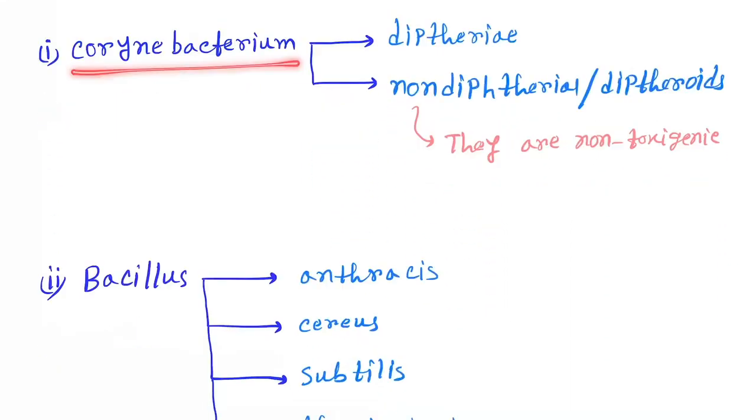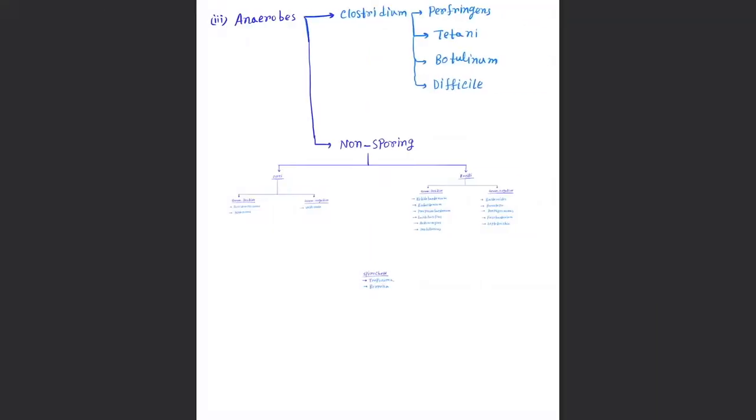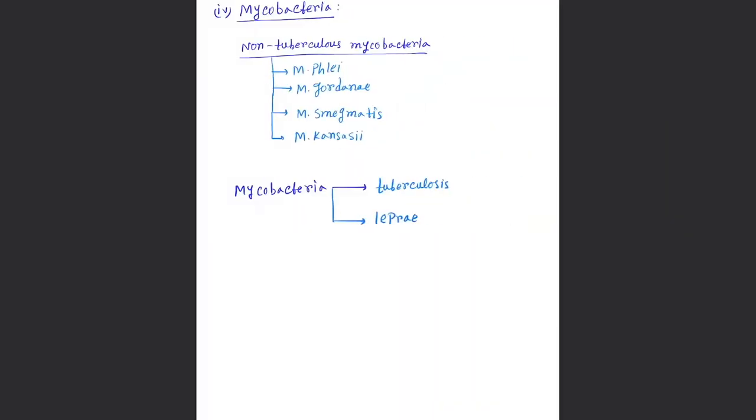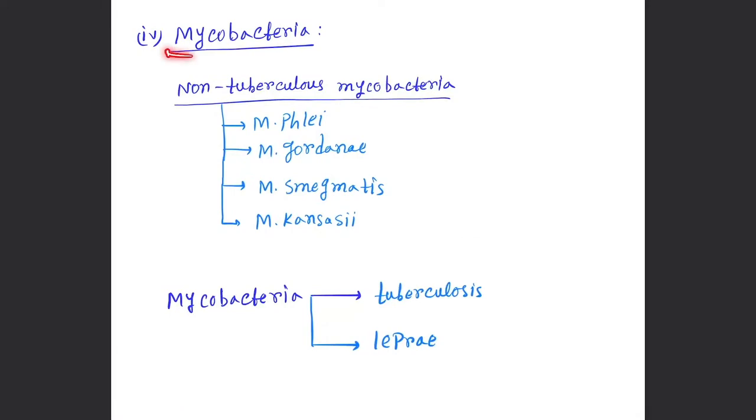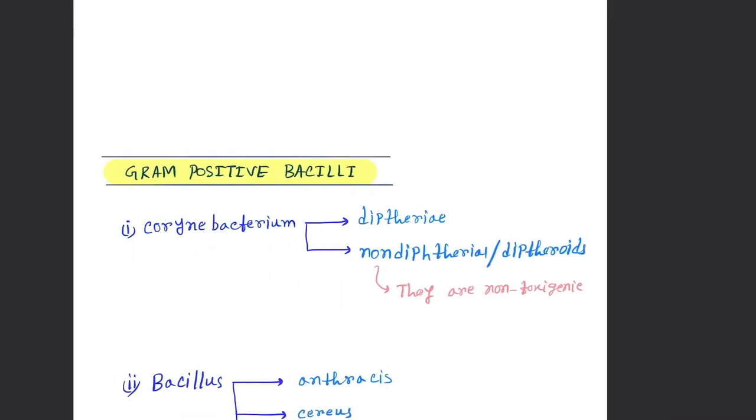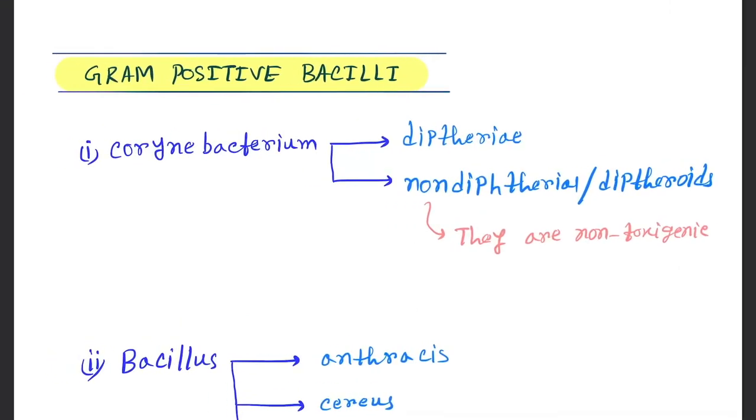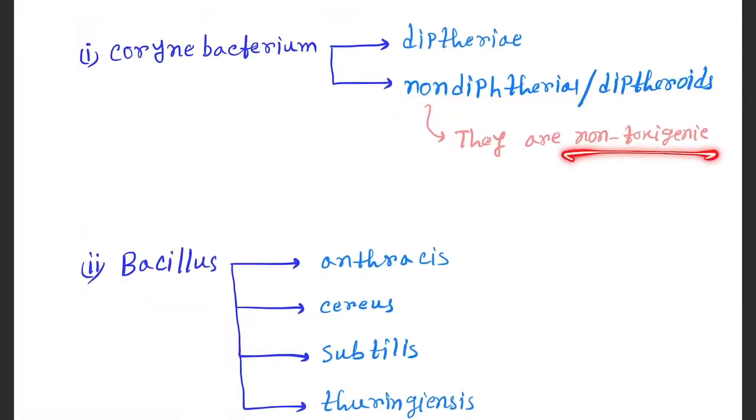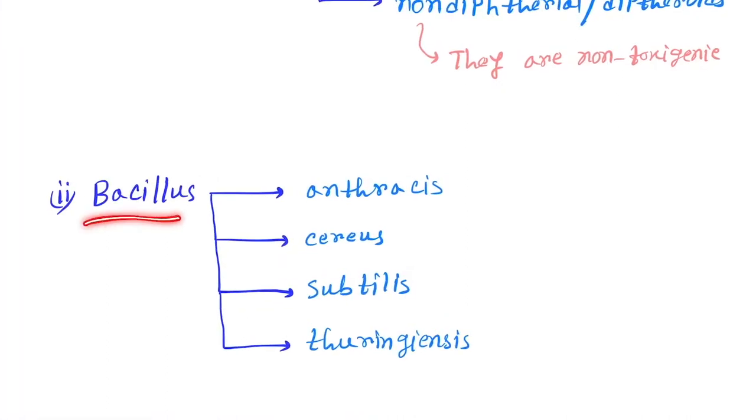Now gram positive bacilli. First one is Corynebacterium, next is Bacillus, next is Anaerobes, next is Mycobacteria, and miscellaneous gram positive bacilli. So starts one by one. Corynebacterium species are diphtheriae, non-diphtheriae or diphtheroids. They are non-toxigenic.